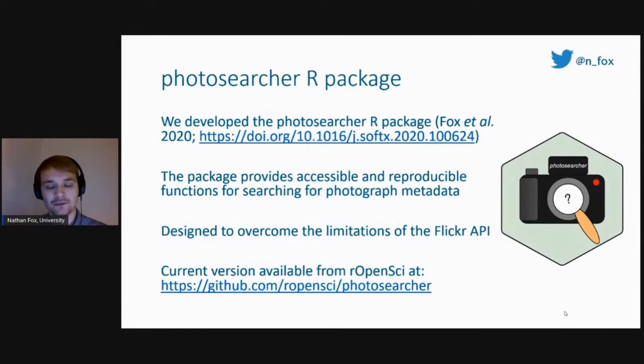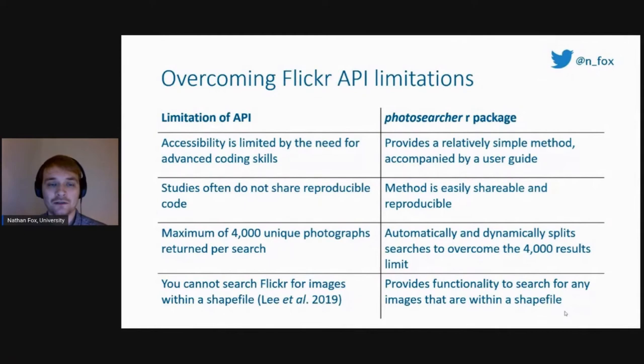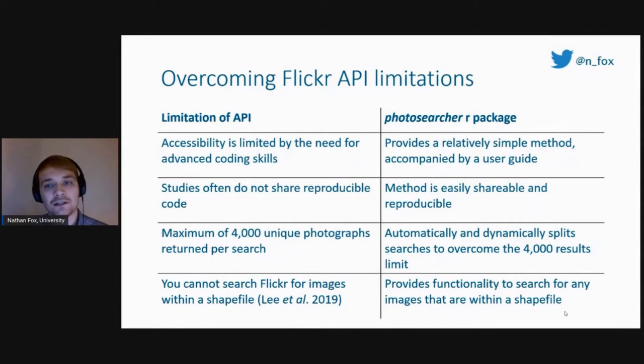We designed the Flickr R package to overcome some of the limitations of the Flickr API. When you search Flickr for images, you build up a list of criteria through coding terms and it returns all matching images. However, accessibility to non-data scientists is limited, as you need very advanced coding skills. With the photosearch.r package, we've provided a relatively simple method, and all functions are accompanied by a user guide with examples that can be copied and edited to your use.